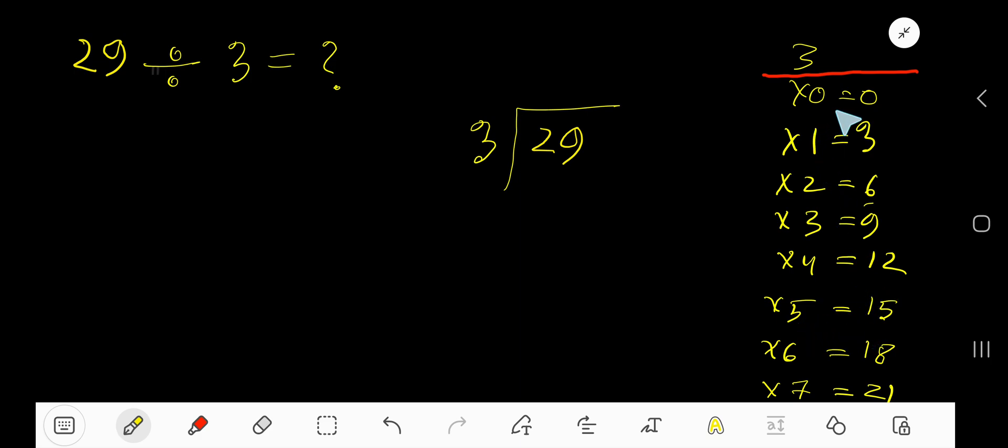To find out the multiplication table of 3, just add 3 with the previous step. 0 plus 3 is 3, 3 plus 3 is 6, 6 plus 3 is 9, 9 plus 3 is 12, 12 plus 3 is 15. Look, 3 goes into this 2 how many times?